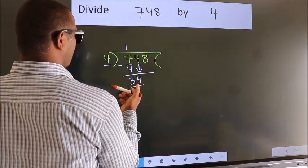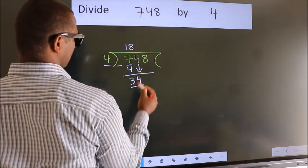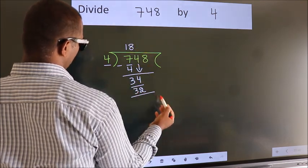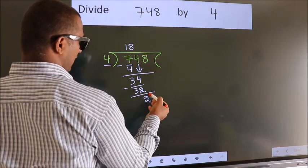A number close to 34 in the 4 table is 4 times 8, which is 32. Now we subtract. We get 2. After this, bring down the beside number.